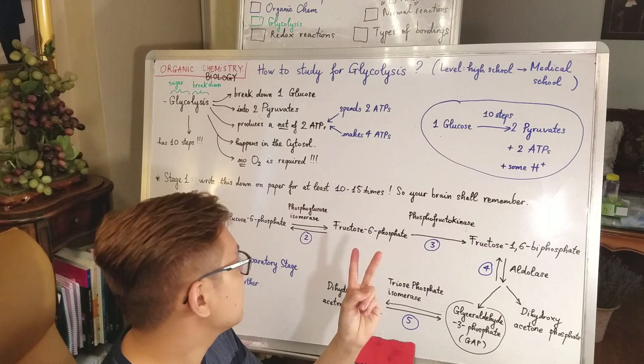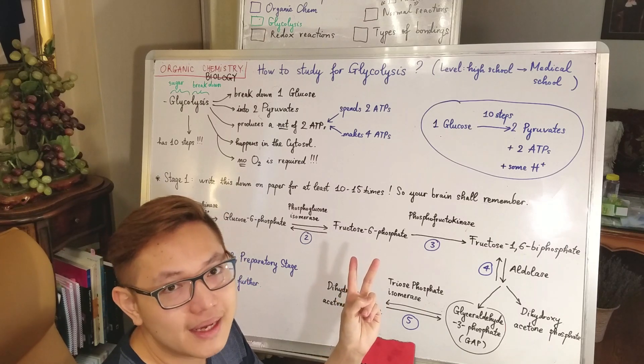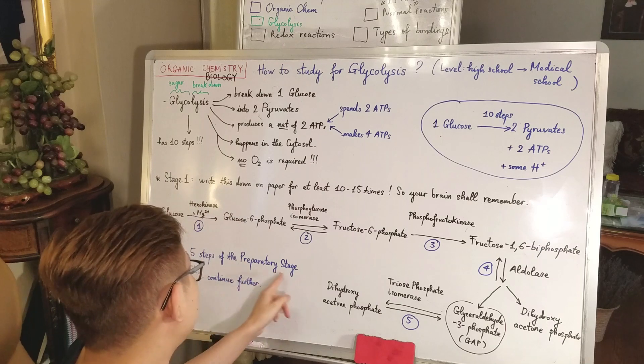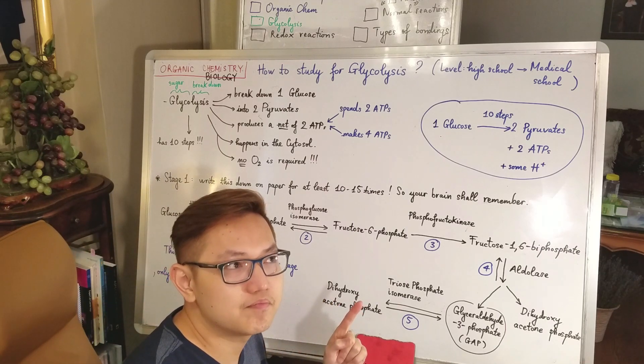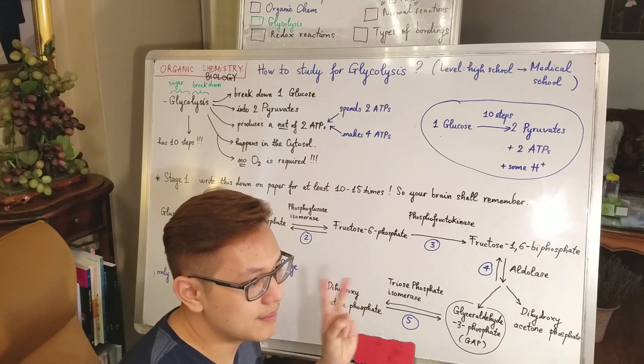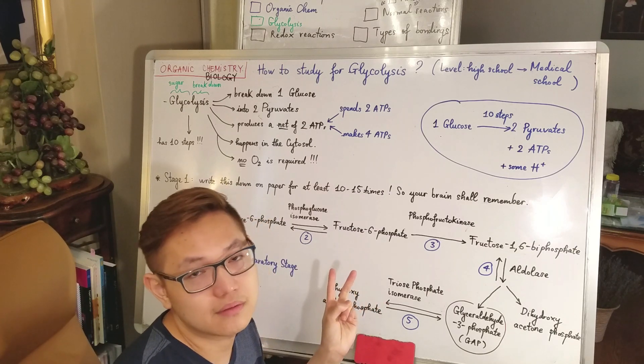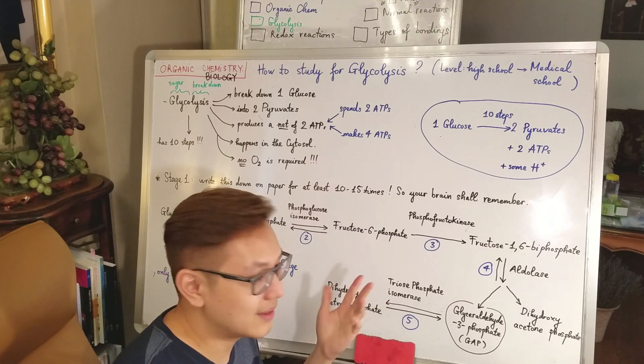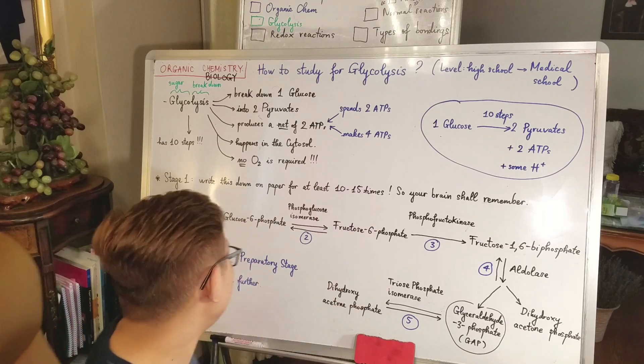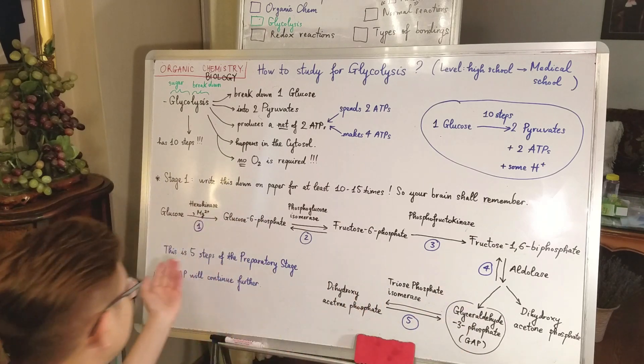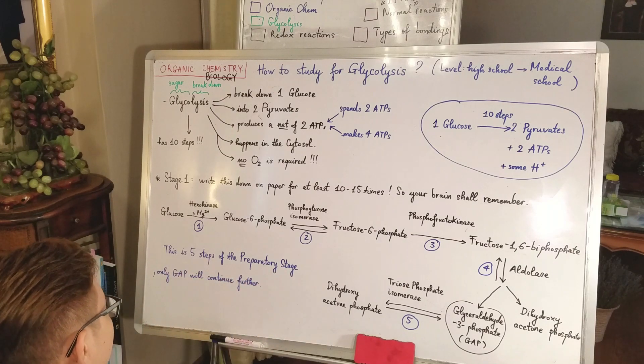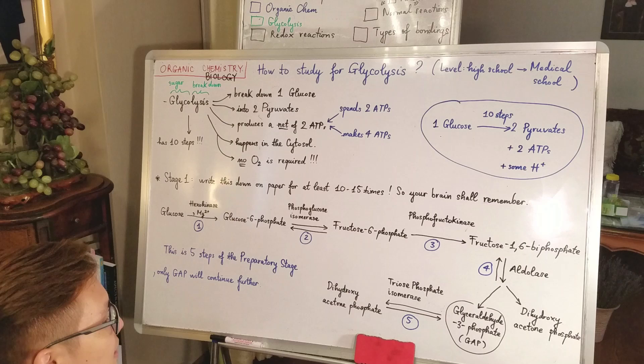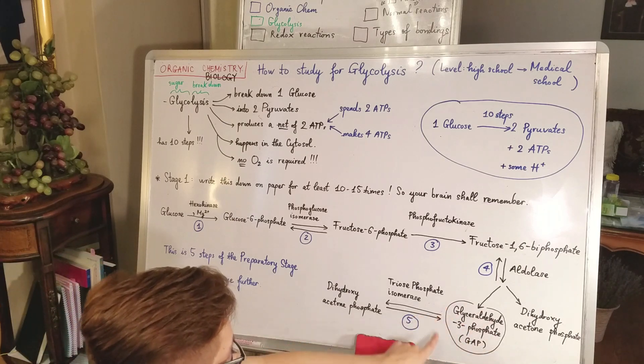The first phase is called preparatory phase or preparatory stage where they prepare. The second phase is called payoff stage. In preparatory stage they actually use up two ATP, and in payoff stage they make four ATP, just like that. So here is step one to step five. This is the five steps of the preparatory stage.